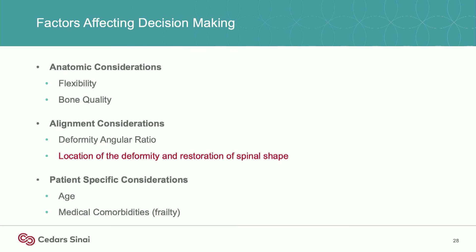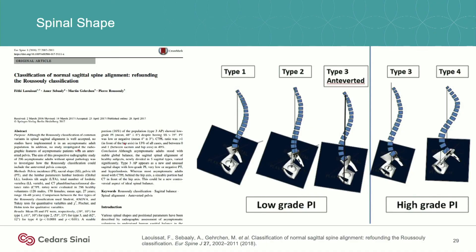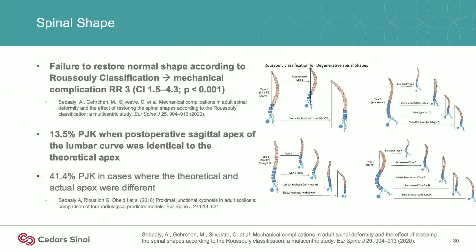Then finally, the location of the deformity and the importance of spinal shape. If you can give a patient what should be their normal anatomy, it's probably better. If the risk of getting a patient back to normal anatomy is relatively low, you should certainly try. Roos Lee's classification — with five different subtypes based on pelvic incidence and apex of lordosis within the lumbar spine — has shown that if you restore a patient to what their classification should be, mechanical complication rates are lower and PJK rates are lower in their series.